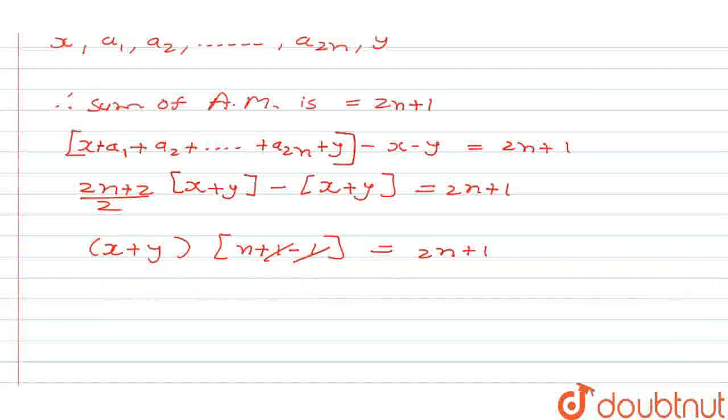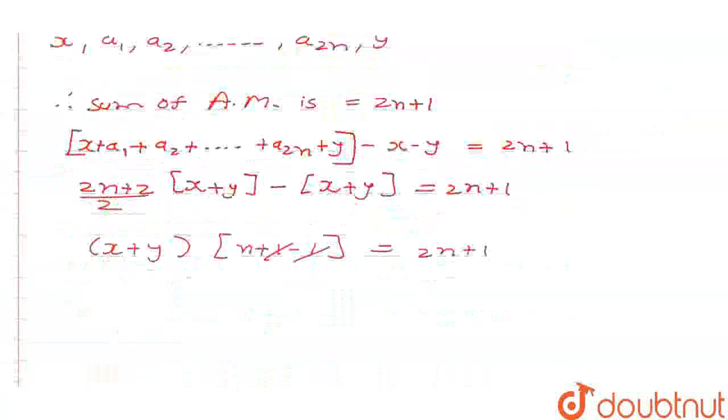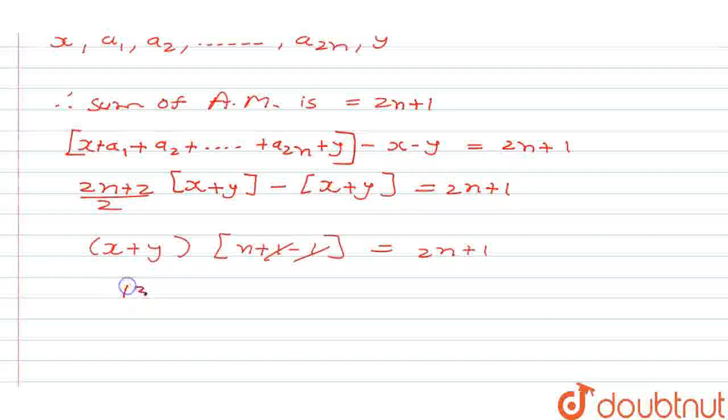Now x plus y value we have already found that is 13 by 6. So we will write here 13 by 6 into n is equal to 2n plus 1. So from here we can say that 13n by 6 minus 2n is equal to 1.